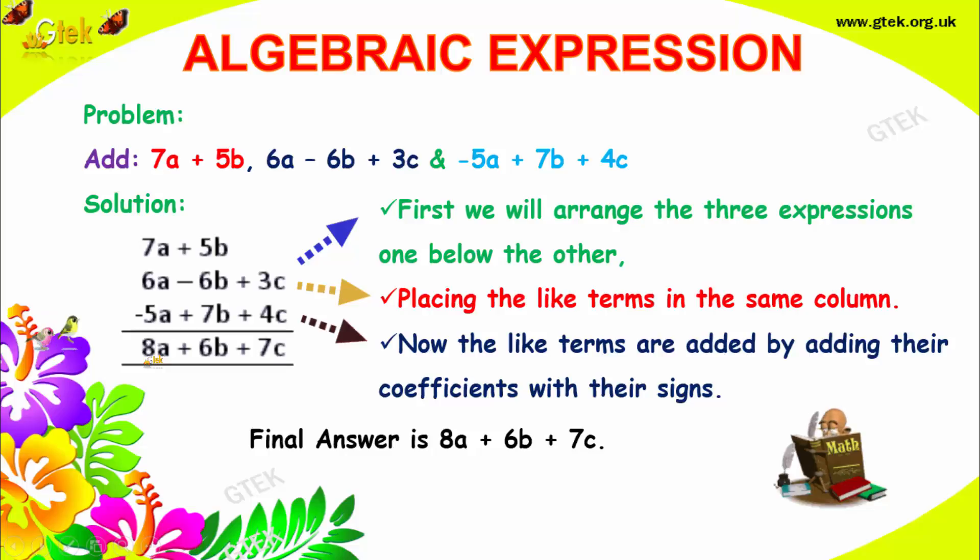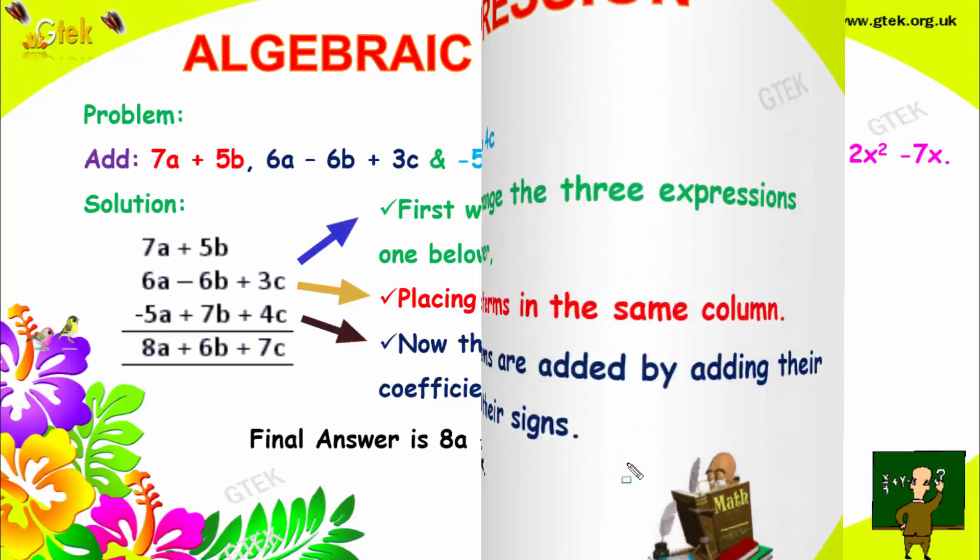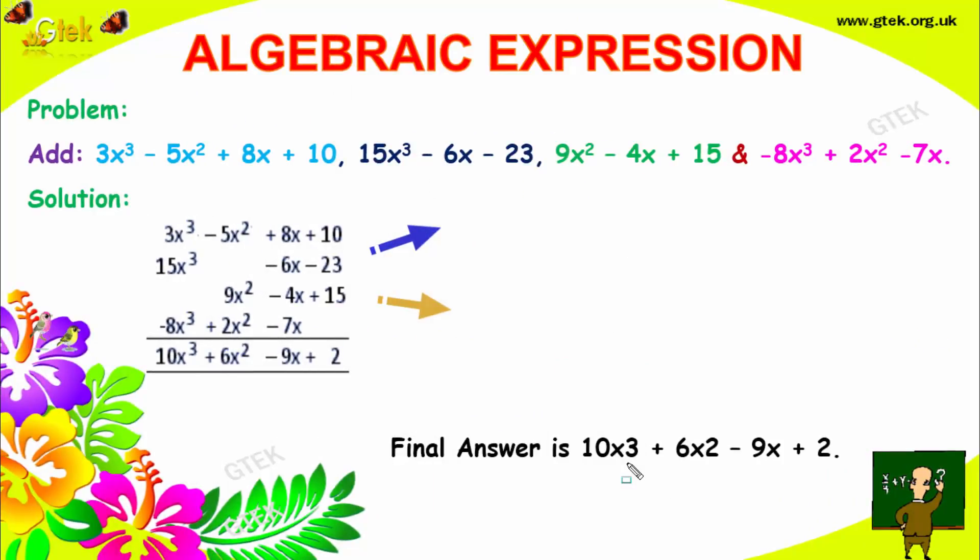You got 8a here. Now I got 5b plus 7b, that's 12b, minus 6, we got 6b here. Now we got 3c plus 4c, we got 7c here. So the final answer is 8a plus 6b plus 7c. We will go to the next problem.